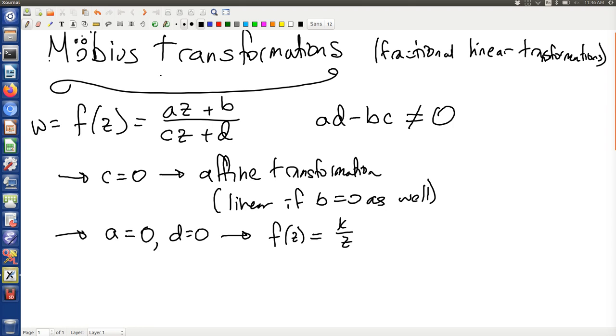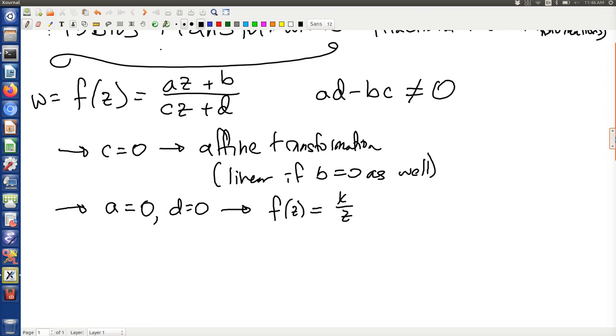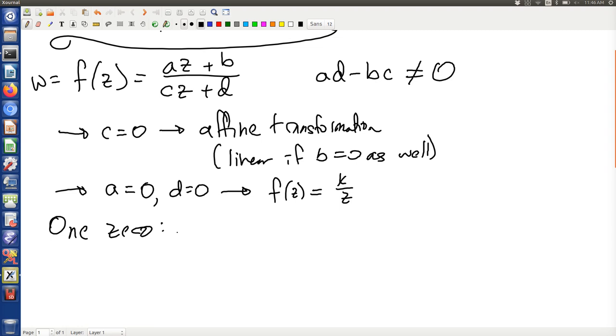Now, in order to really understand what Möbius transformations do, you will notice that they have one zero, that's when the numerator is zero, and one pole, that's where the denominator is zero. So one zero, that's where az + b equals zero. Of course, that's where z equals negative b over a.